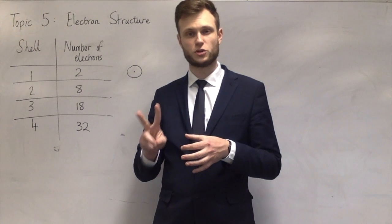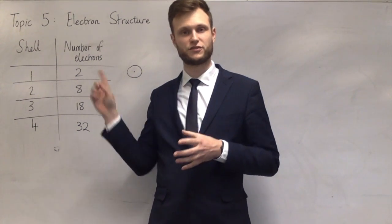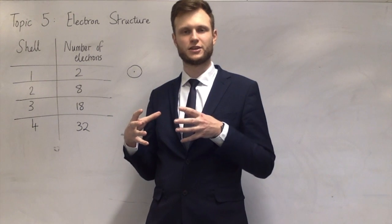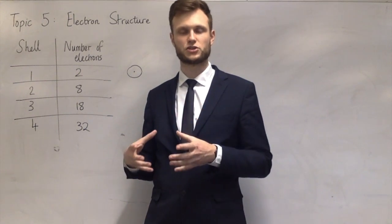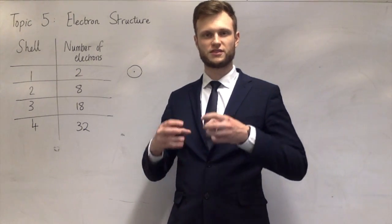The second shell is where it gets a bit different. The second shell, the first two electrons exist in a sphere, the same as the first one, but that sphere is slightly larger than the first one because it's a bigger shell.